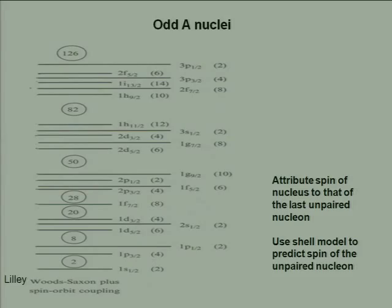We introduced the idea of the shell model, which came out of the notion of a central potential to which we added an LS coupling, splitting the orbitals into this scheme. You had homework, and you'll have some more on predicting the spins of odd-A nuclei. In the absence of anything else, that's the best you can do. In a lot of cases you get the right answer, but not every time, and especially for excited states the approximations break down more and more.